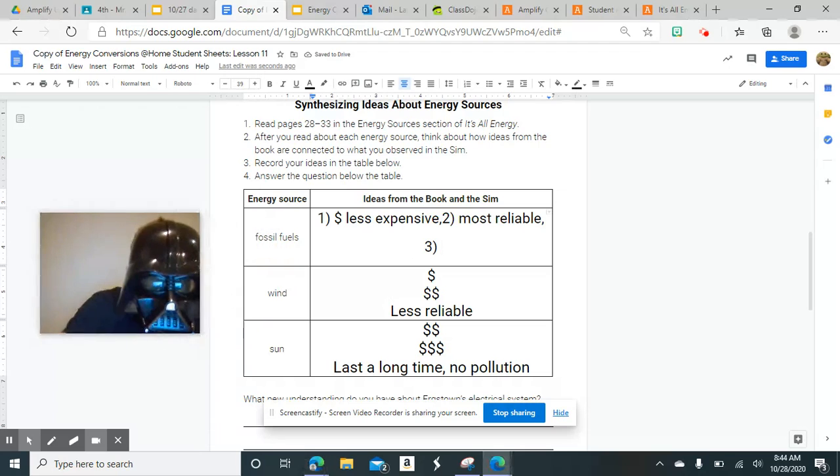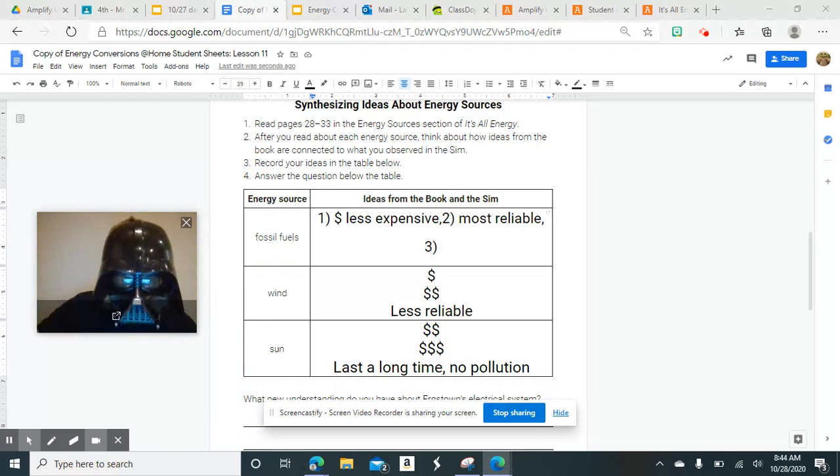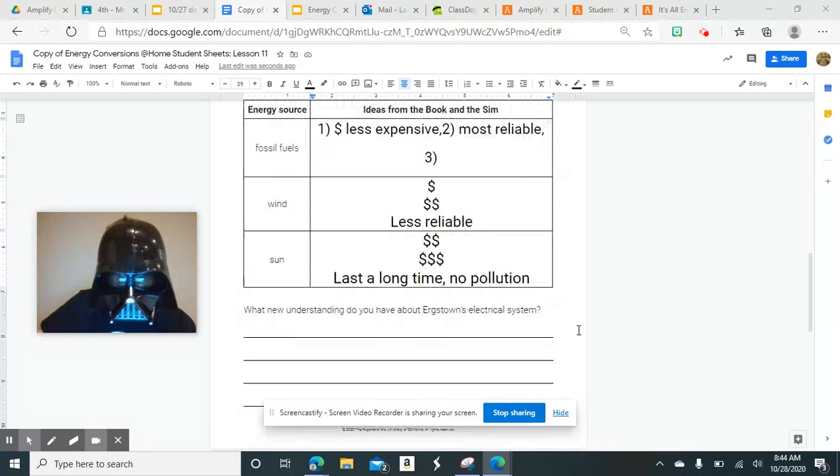I need to know wind's cost, its reliability, and its environmental impact. For sun, I need to know its cost, its reliability, and its environmental impact. And when you're done with those three things down here at the bottom, you can write an understanding.